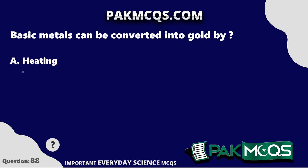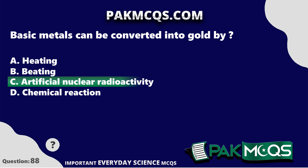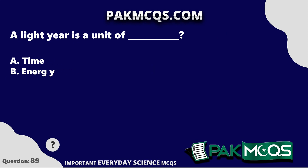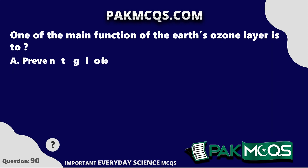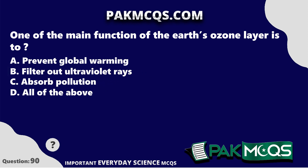Basic metals can be converted into gold by artificial nuclear radioactivity. A light year is a unit of length. One of the main functions of the earth's ozone layer is to filter out ultraviolet rays.